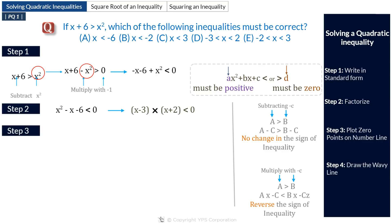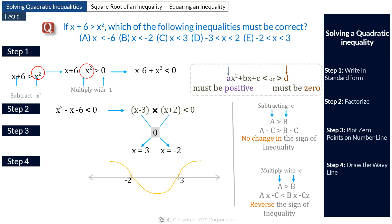In step 3, we plot the zero points on the number line. The factor x minus 3 equals 0 at x equals 3, and x plus 2 equals 0 at x equals minus 2. So the zero points are 3 and minus 2. In step 4, we draw a wavy line from the top right through both zero points. The inequality is negative where the wavy line is below the number line, so x squared minus x minus 6 less than 0 holds for minus 2 less than x less than 3. Option E is the correct answer.